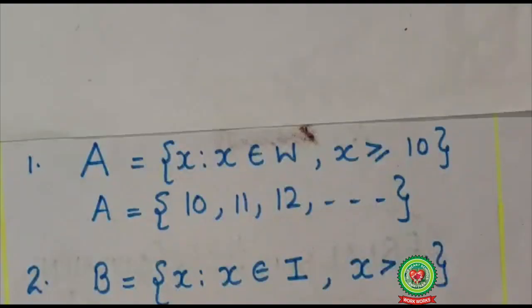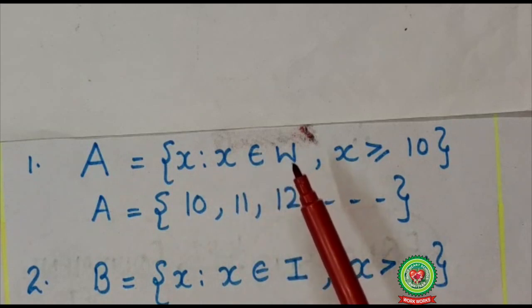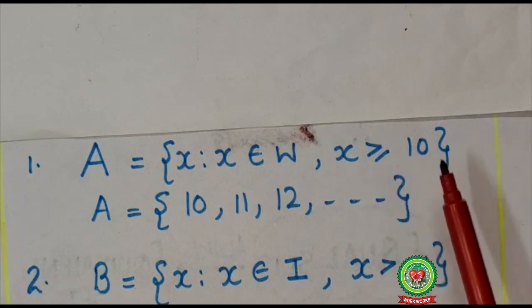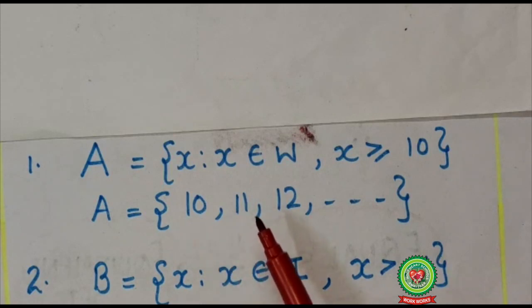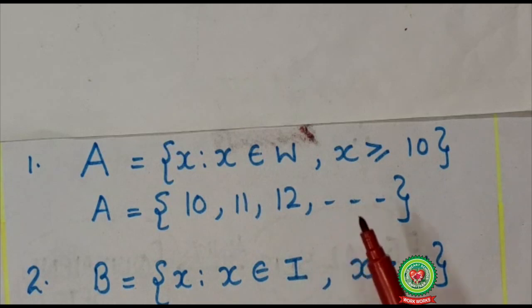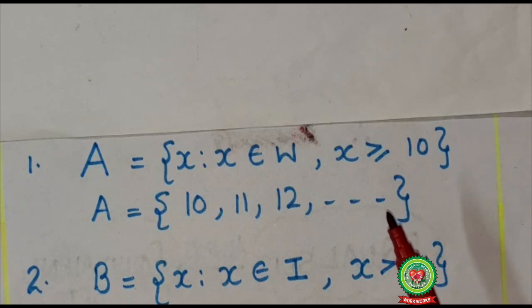Now, here we are having more examples. These are A: x such that x ∈ W where W stands for whole numbers and x ≥ 10. So here in roster form, we will start from 10. What will come? 10. Next greater number is 11, then 12, then so on. Here so on sign indicates that listing is endless. It will never come to an end. So it is an infinite set.